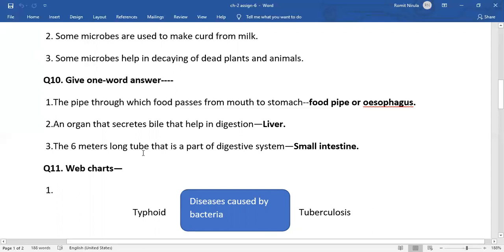Number three, the six meters long tube that is a part of digestive system. This is the longest part of digestive system, that is small intestine.